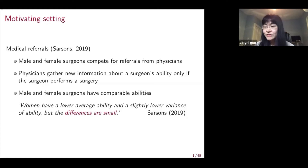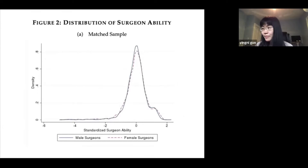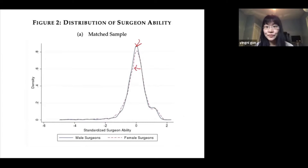In this medical referral market, male and female surgeons compete for referrals from physicians. Physicians gather new information about a surgeon's ability only if the surgeon performs a surgery. Male and female surgeons have comparable abilities. As documented by Sarson's, in her sample, women have a lower average ability and a slightly lower variance of ability, but the differences are really small. This figure two from her paper shows the distribution of surgeon ability. The solid curve is the distribution for men, the dashed curve for women, and the two curves are very close to each other.